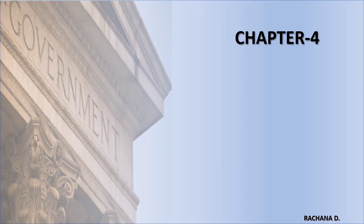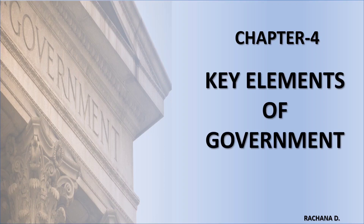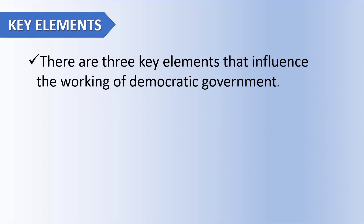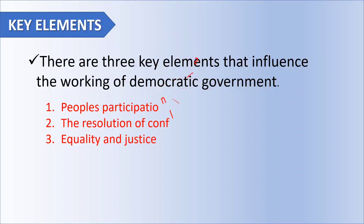Hello everyone. Today we are going to start with a new chapter of civics — Chapter 4, named 'Key Elements of Government.' In this chapter, we are going to see the key elements which influence the working of the democratic government, which are: first, people's participation; then the resolution of conflict; and equality and justice. By the end of the chapter, we will know these three key elements.